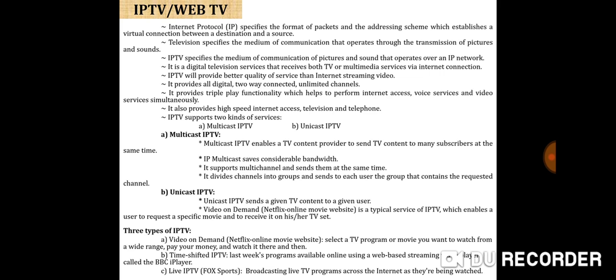The second type is unicast IP TV. In the case of unicast IP TV, it sends a given TV content to a given user. Video on demand, like Netflix or an online movie website, is a typical service of IP TV, which enables a user to request a specific movie and to receive it on his or her TV set.